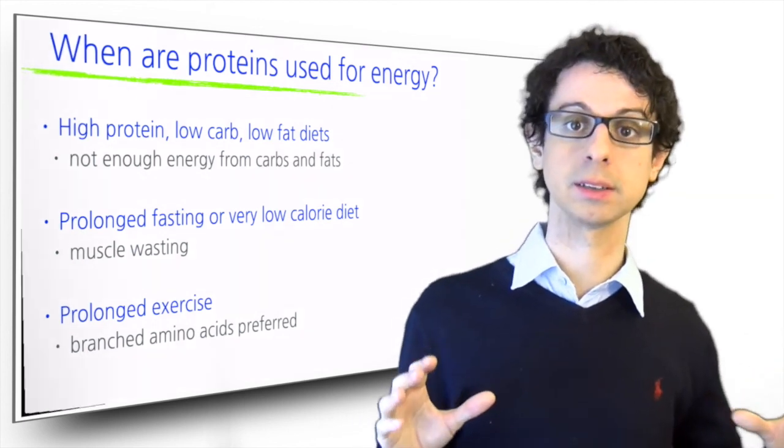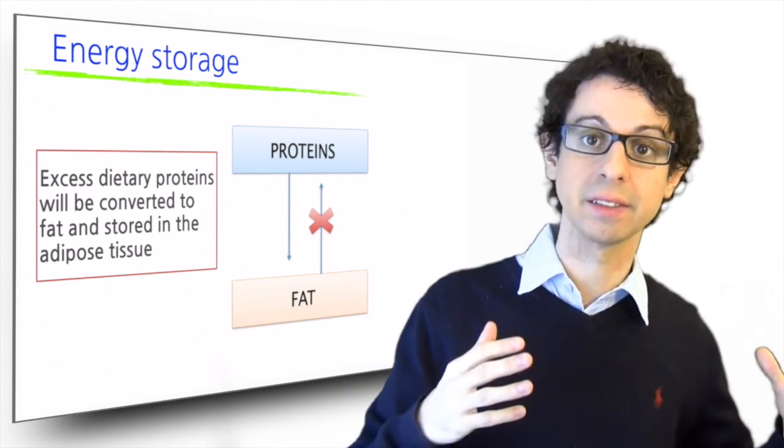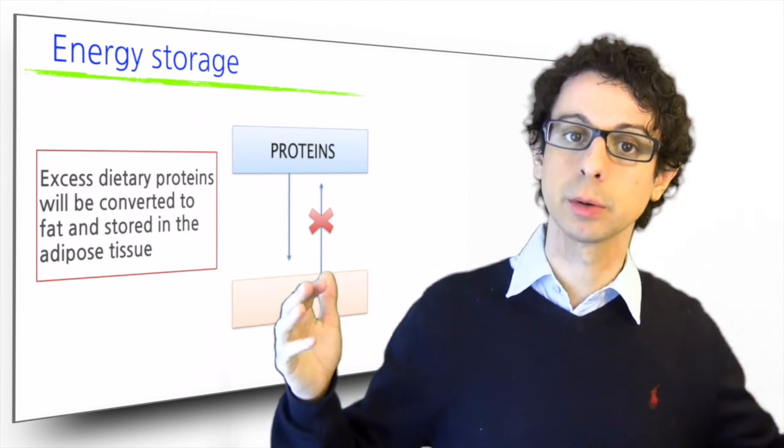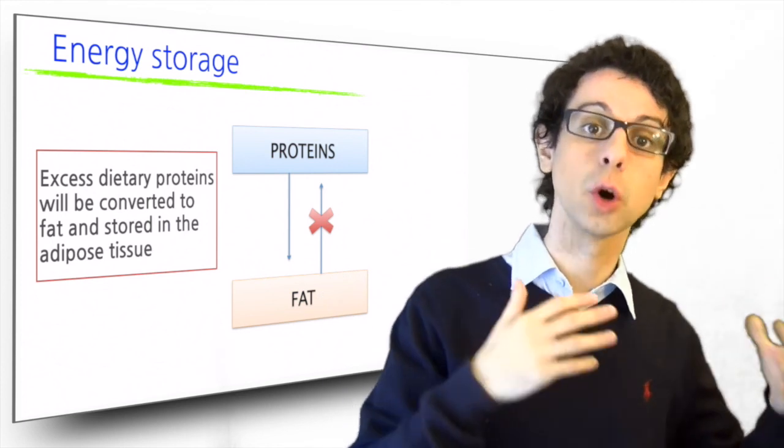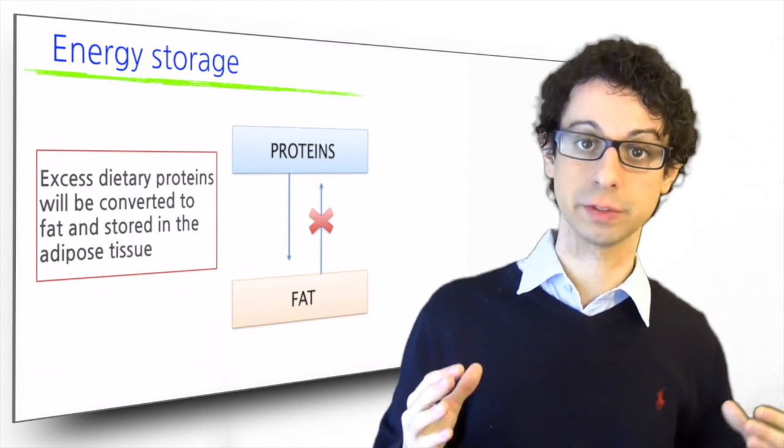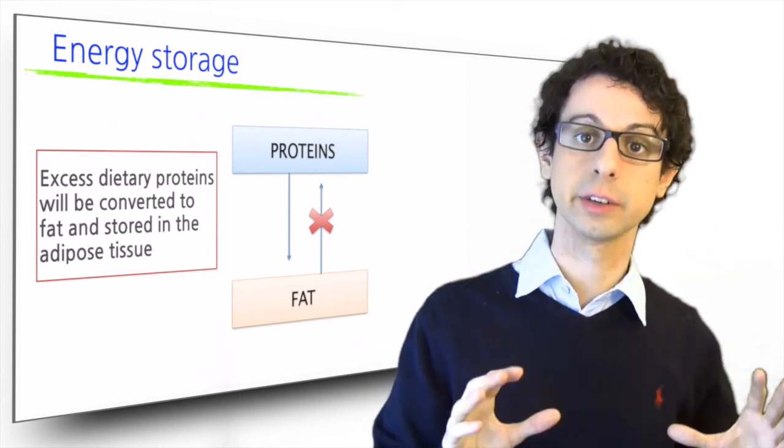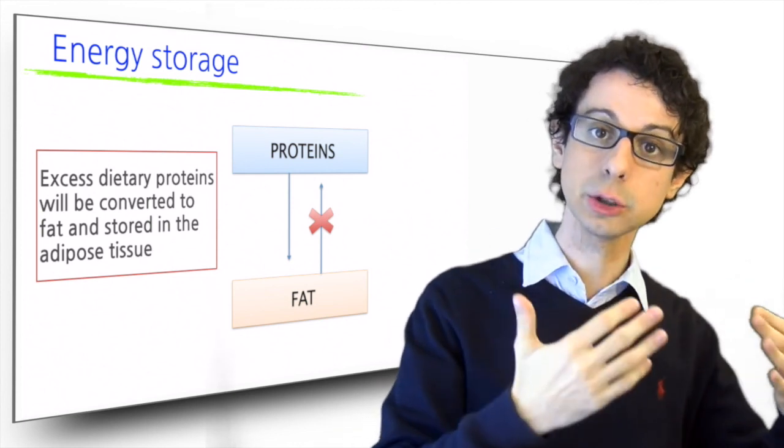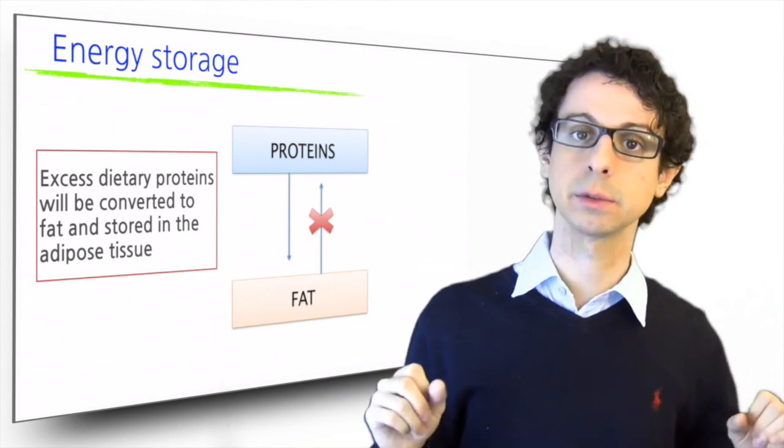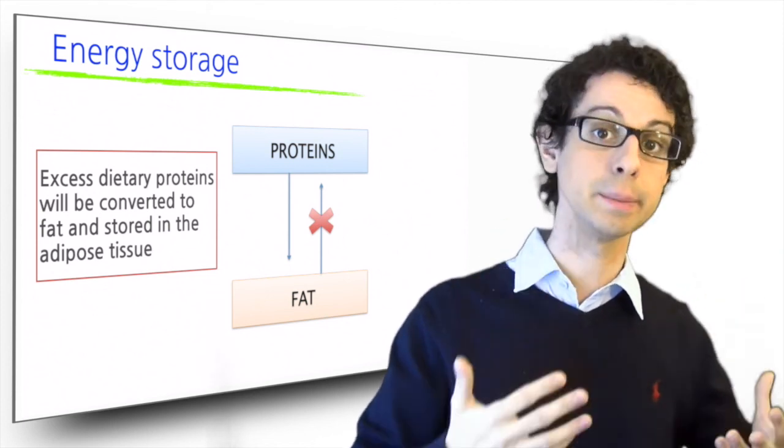If we have excess proteins and we do not need them for protein synthesis because we have enough, and we don't even need them for energy because we have enough carbs and fats. So now we are not exercising, we are just eating too much. We just have extra proteins we don't need. You remember that we cannot store proteins for later use. And so what we do at this point is we take these extra proteins and convert them to fat, which can then be stored into our adipose tissue. But this conversion is irreversible. So once we have turned proteins into fat, we have no way of turning fat back into proteins at the later time, because we lack the enzymes to do that. So once we have made fat from proteins, we have to either burn it as fat or keep it in our adipose tissue.